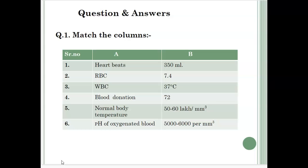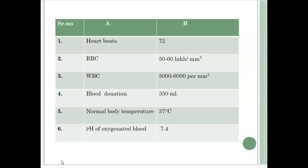Now the question and answers part. The very first question is match the column. I will directly come to the answers. Heartbeats: there are a total of 72 heartbeats in a minute. RBC is 50 to 60 lakh per millimeter cube in our blood. WBC, that is white blood cells, is 5000 to 6000 per millimeter cube. Blood donation: 350 ml blood you can donate in a day. Normal body temperature is 37 degree Celsius and pH of oxygenated blood is 7.4.